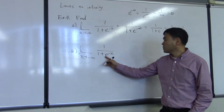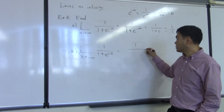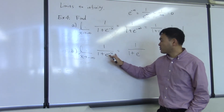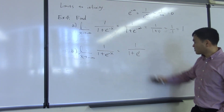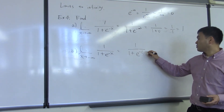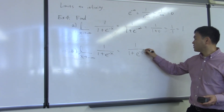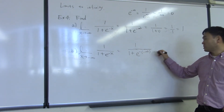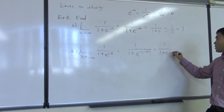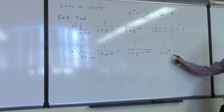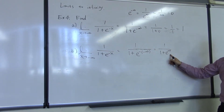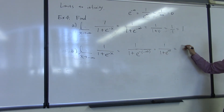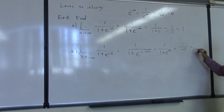Now, however, the second limit is slightly different. Here you're plugging in negative infinity for x into negative x, which means it's a negative of negative infinity. So if you replace x by negative infinity, you have negative of negative infinity, which is positive infinity. So e to the positive infinity is a very large number — it goes to positive infinity. So the denominator is 1 plus infinity, giving you 1 over infinity, and therefore you get zero.